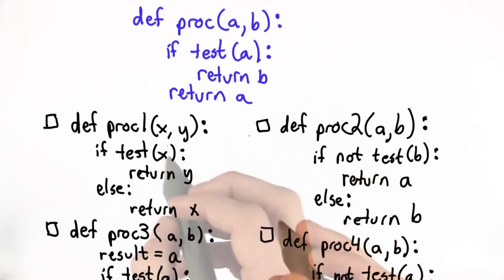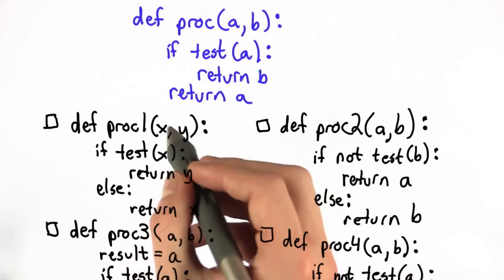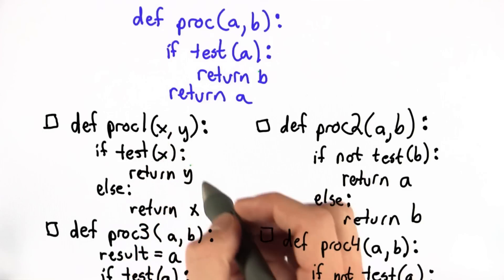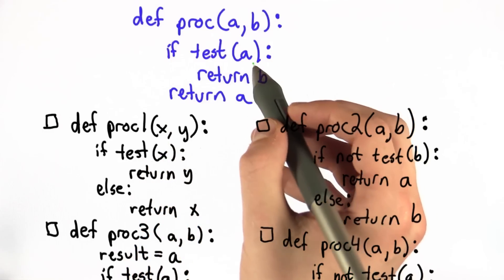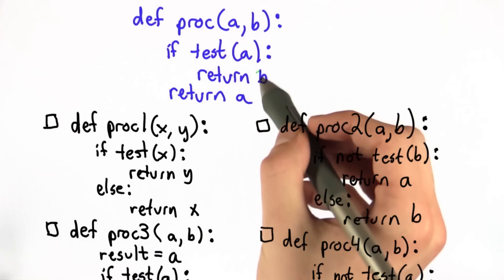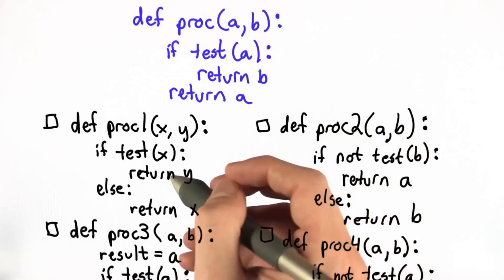So let's start looking at them. In proc 1, if test x, which is the first parameter, is true, we return y. This matches with the original function. If test of the first parameter is true, we return the second, as we do in proc 1.